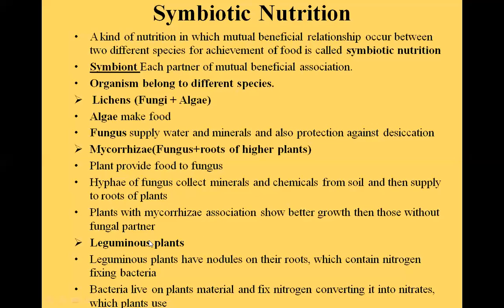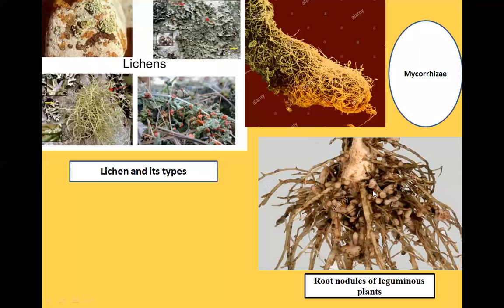These plants are called legume plants. Legume plants have round structures on their roots called root nodules. These nodules actually contain living bacteria. The bacteria get shelter and a house for living inside these nodules.